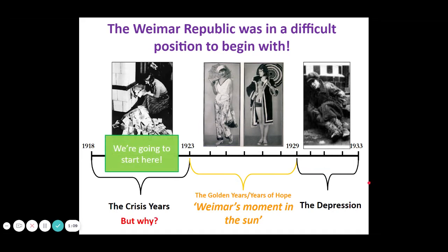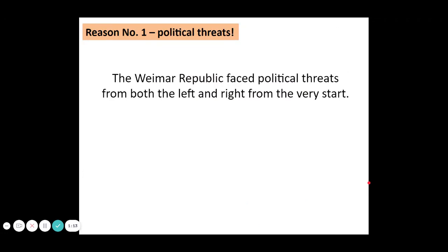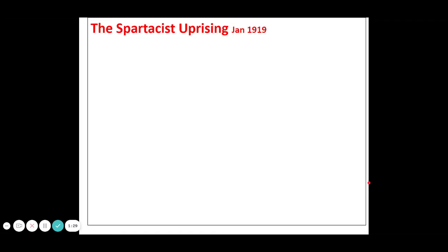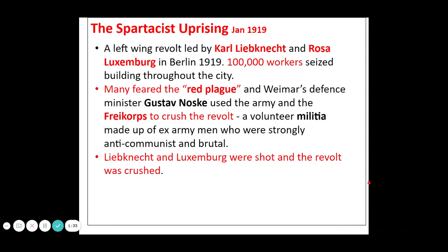We've got this crisis, then the beginning years of the Weimar Republic — the birth of the Weimar Republic. And there are a number of reasons why there were problems for the early Weimar Republic. Firstly, it faced quite significant political threats from the left and the right. We see that first from the political left with the Spartacist uprising in 1919 — a revolt led by Karl Liebknecht and Rosa Luxemburg. About 100,000 workers seized buildings throughout Berlin, and there were greater fears that there would be a communist revolt, a red plague. So a guy called Gustav Noske uses the army and the Freikorps, these ex-soldiers, to crush the revolt.